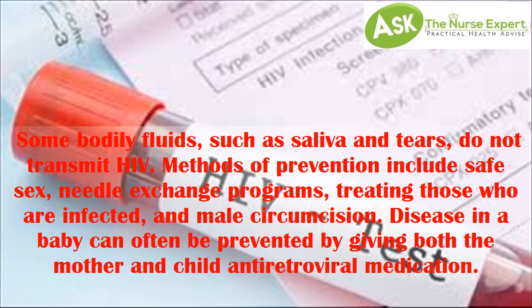HIV can also be transmitted from mother to child during pregnancy, delivery, or breastfeeding. Some bodily fluids such as saliva and tears do not transmit HIV. Methods of prevention include safe sex, needle exchange programs, treating those who are infected, and male circumcision. Transmission to a baby can often be prevented by giving both the mother and child antiretroviral medication.